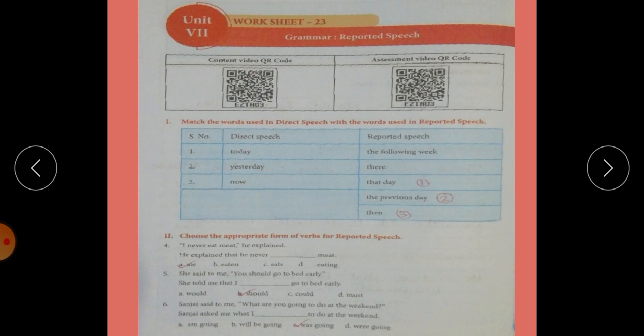Second exercise. Choose the appropriate form of verbs for reported speech. I never eat meat, he explained. What type of sentence? It starts with subject, so it is a statement. So he explained that, conjunction that. He never eat would be wrong. What type of tense change? Next tense will change.